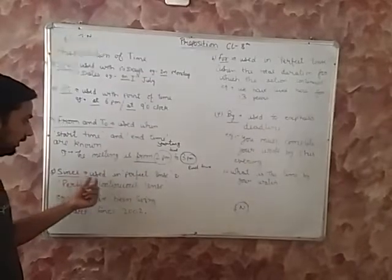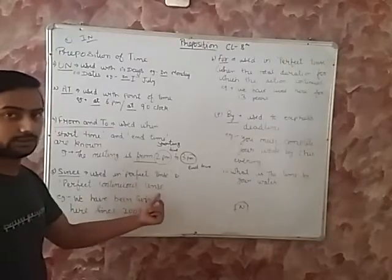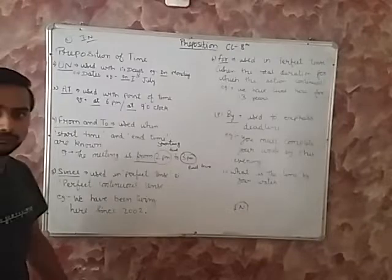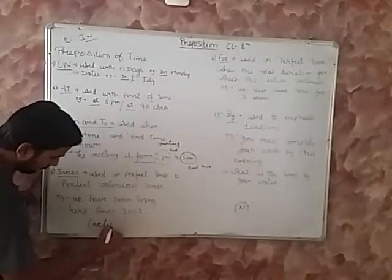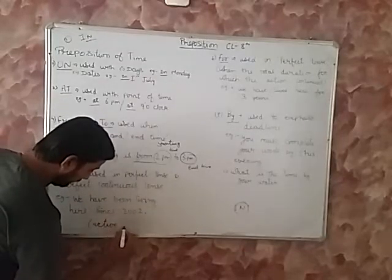Then since. Since is used in perfect tense and perfect continuous tense. For example, we have been living here since 2002. Keep one thing in mind. Here the action means the living action started.